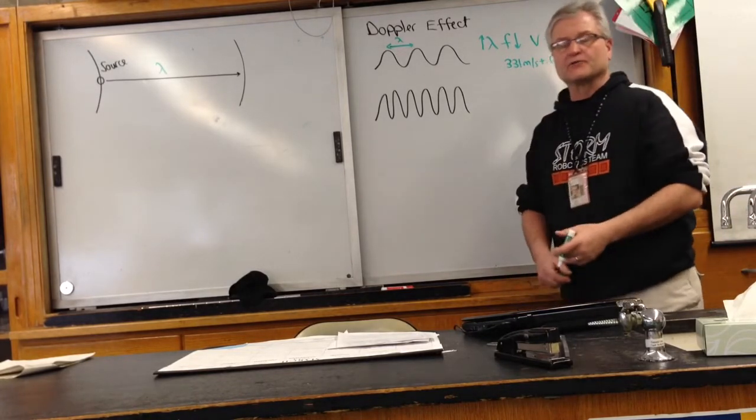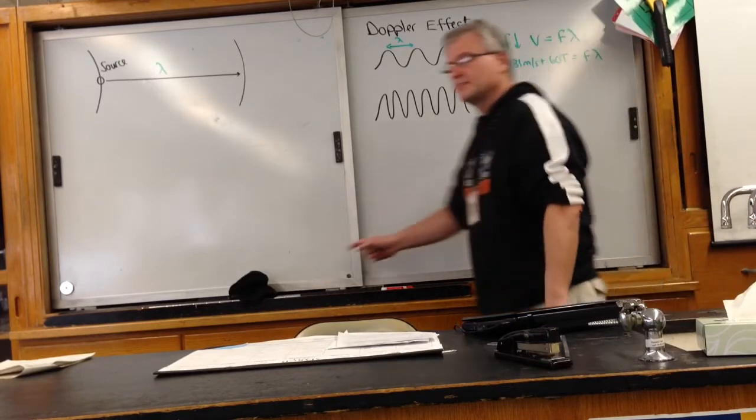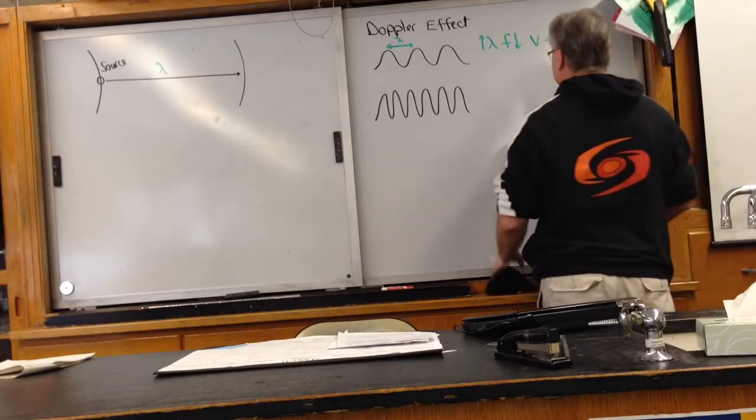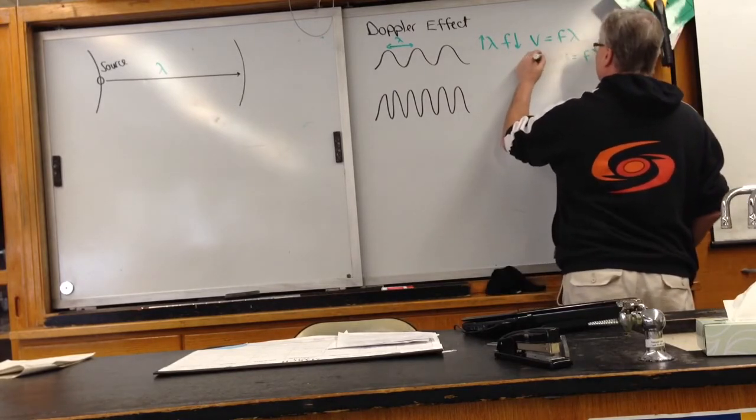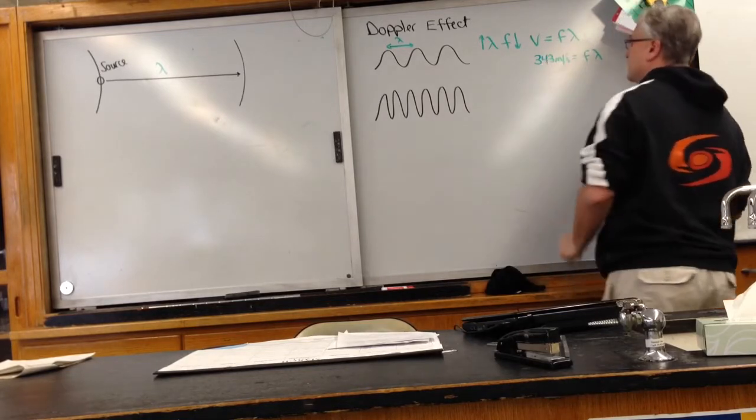Now the default value for the speed of sound, if we don't know the temperature, most people have agreed on room temperature. So unknown temperature, we're going to end up using 343 meters per second for the default value.